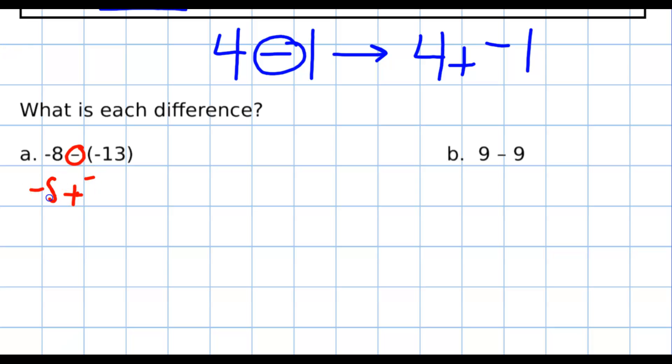So it's going to be negative 8 plus the opposite of negative 13. The opposite of negative 13 is positive 13. Now, I'm writing out every single step. You obviously can take some shortcuts because I'm just showing you exactly what I'm thinking.